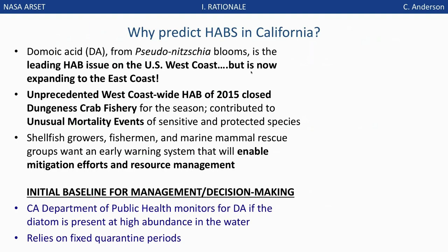I'll start with why we would want to predict harmful algal blooms in California. The major recurring harmful algal bloom issue on the West Coast is the production of the neurotoxin domoic acid by the diatom Pseudo-nitzschia. Pseudo-nitzschia is a unique diatom because it's the only genus of diatoms that produces a toxigenic compound. Most other harmful algal blooms are caused by flagellates, usually dinoflagellates, often referred to as red tides. Pseudo-nitzschia blooms frequently occur in coastal California under somewhat understood conditions, and we have a sense of when this organism will produce a nasty compound called domoic acid.